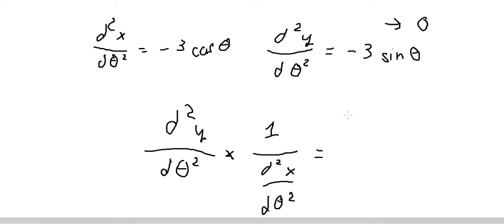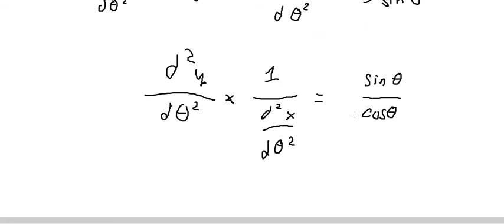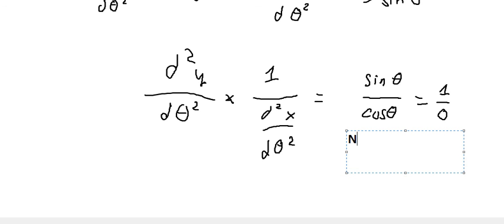So we get about sin theta over cos theta, and if we put about pi over 2, you will see that is about 1 divided by 0, so we can say this value does not exist.